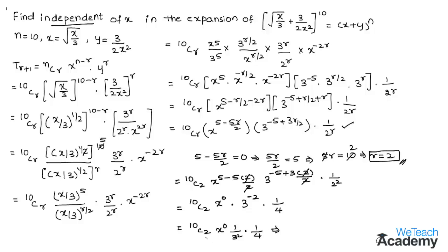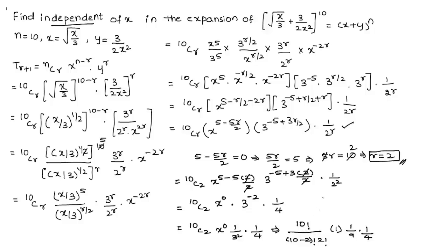Now let us find the value of the binomial coefficient 10C2. We get 10! / (8! · 2!) = (10 × 9 × 8!) / (8! × 2 × 1). Cancelling 8! and simplifying: 10 × 9 / 2 = 45. So the independent term = 45 × (1/9) × (1/4) = 45/36.